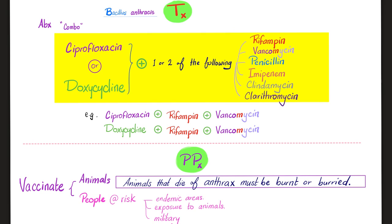As for management, we use an antibiotic combination. Use one of these: ciprofloxacin or doxycycline, plus one or two of the following — rifampin, vancomycin, good old penicillin, imipenem, clindamycin, or clarithromycin. Here are a few examples of what you can use.